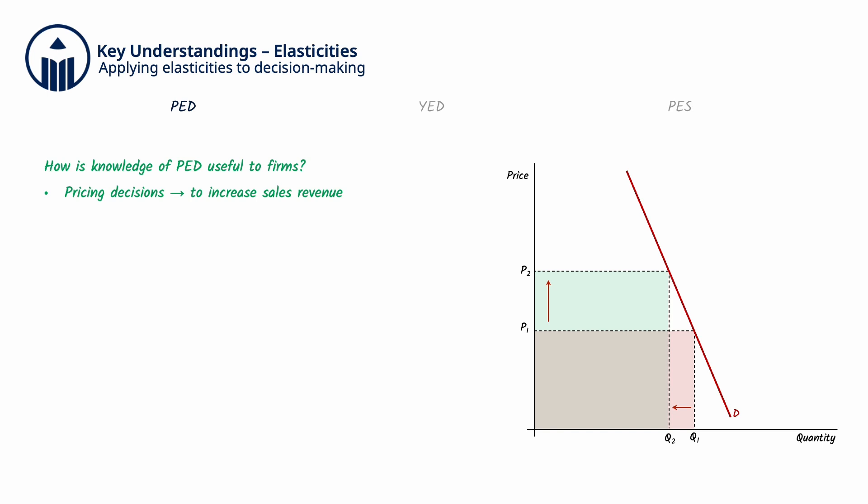If the demand for a firm's product is price inelastic, this means that any change in price will lead to a less than proportionate change in quantity demanded, and so raising the price from P1 to P2, for example,